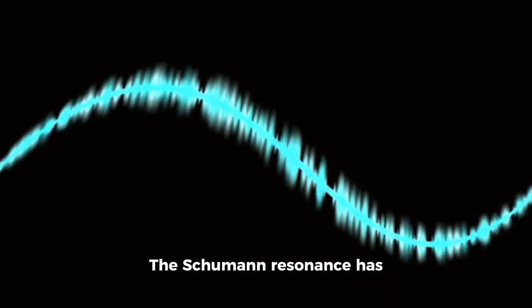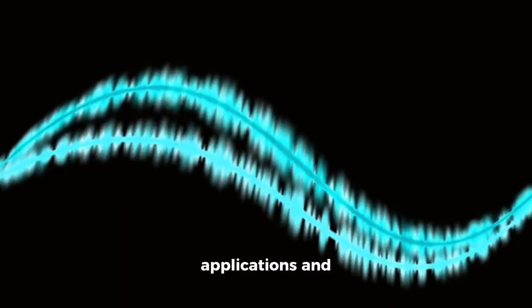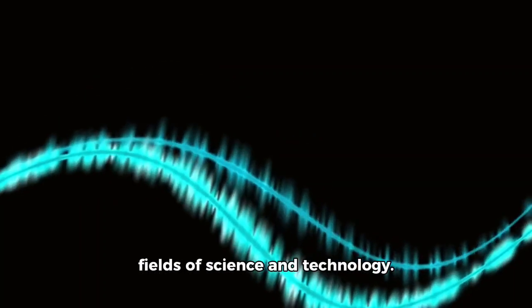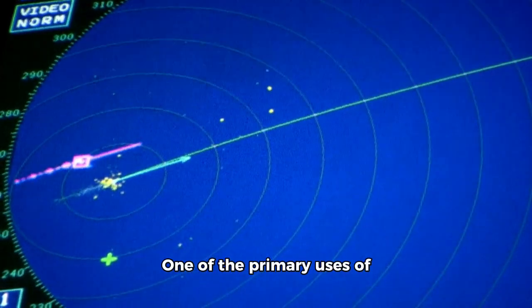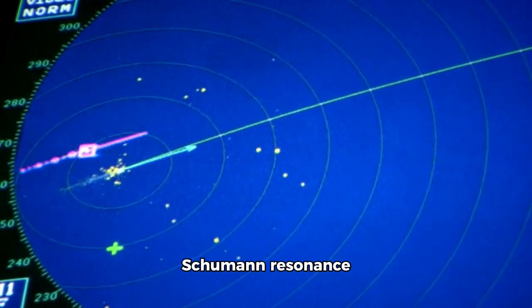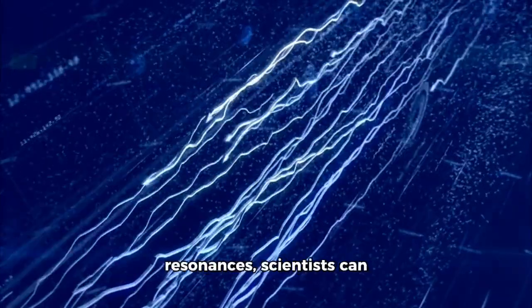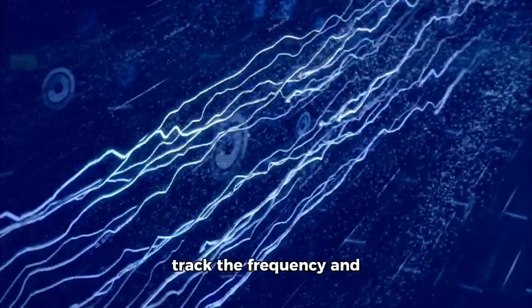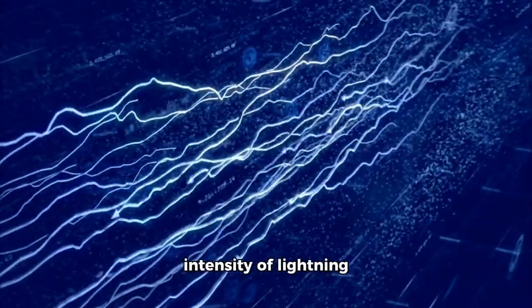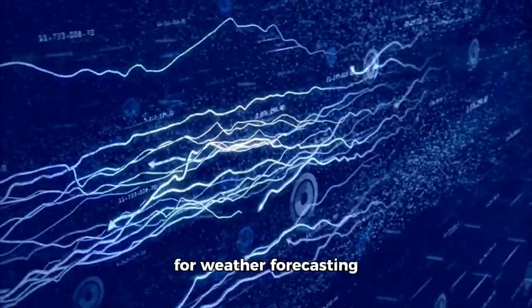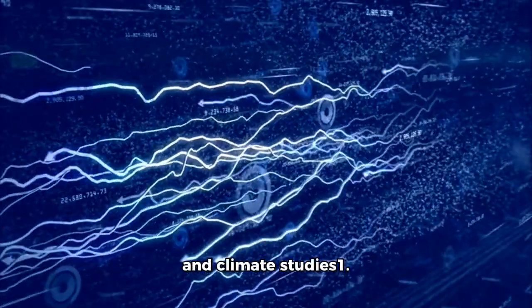The Schumann resonance has several important applications and implications in various fields of science and technology. One of the primary uses of Schumann resonance observations is in the study of global lightning activity. By monitoring the resonances, scientists can track the frequency and intensity of lightning strikes around the world, providing valuable data for weather forecasting and climate studies.